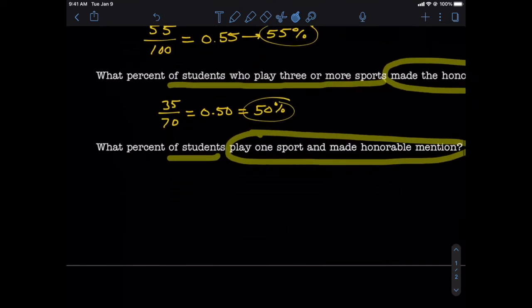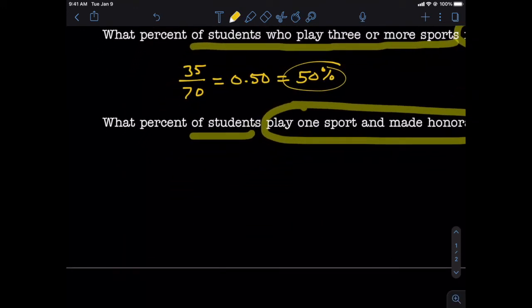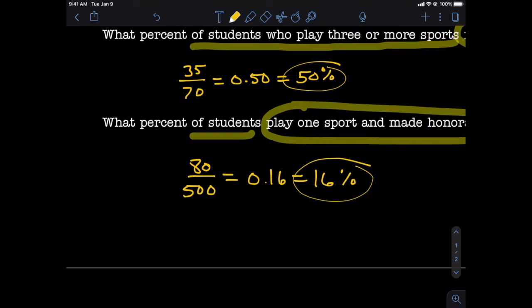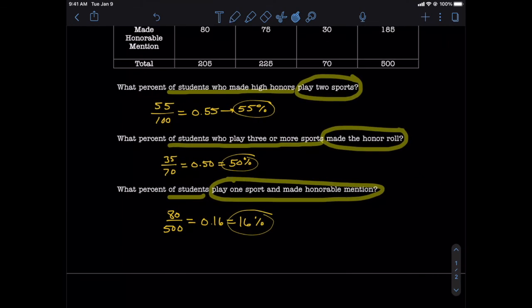Now we can set up our part to whole ratio where the top of our fraction is going to be the intersection, 80, over the grand total of 500. The decimal equivalent here is going to be 0.16, and the percent equivalent of that is going to be 16 percent. So 16 percent of students play one sport and made honorable mention.